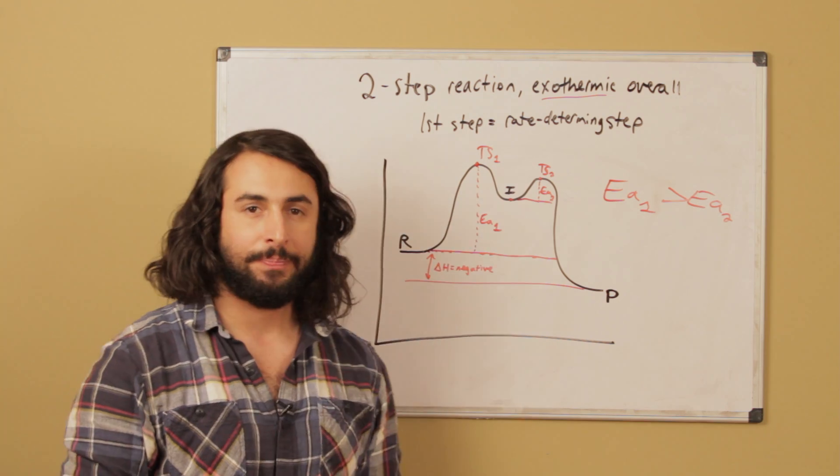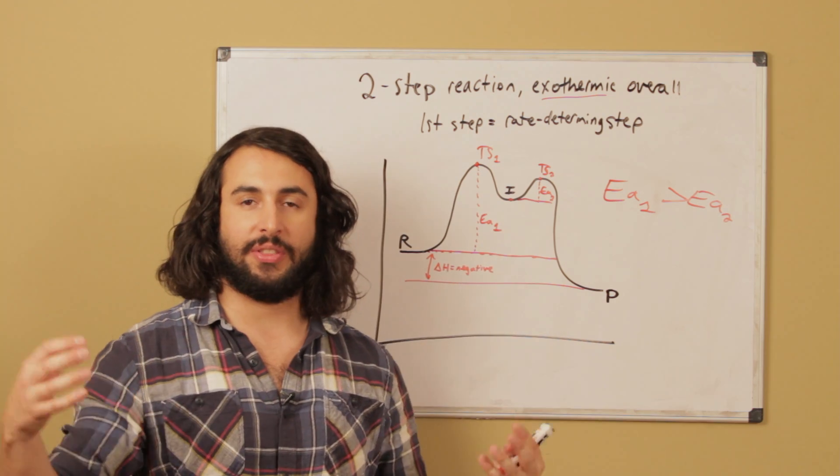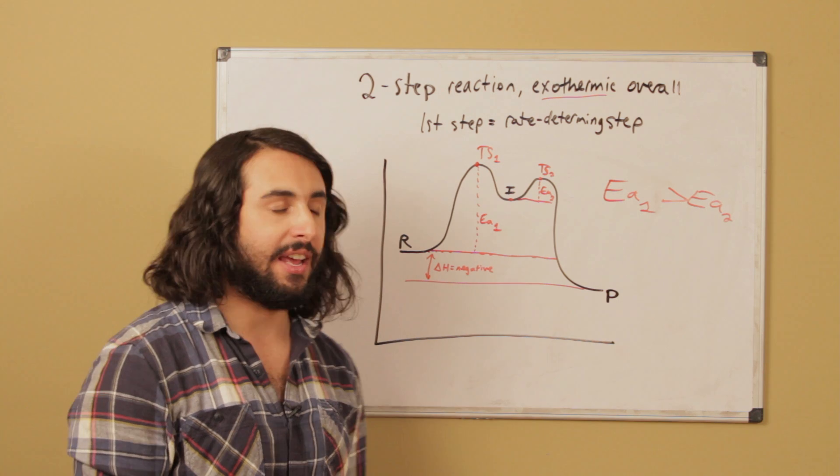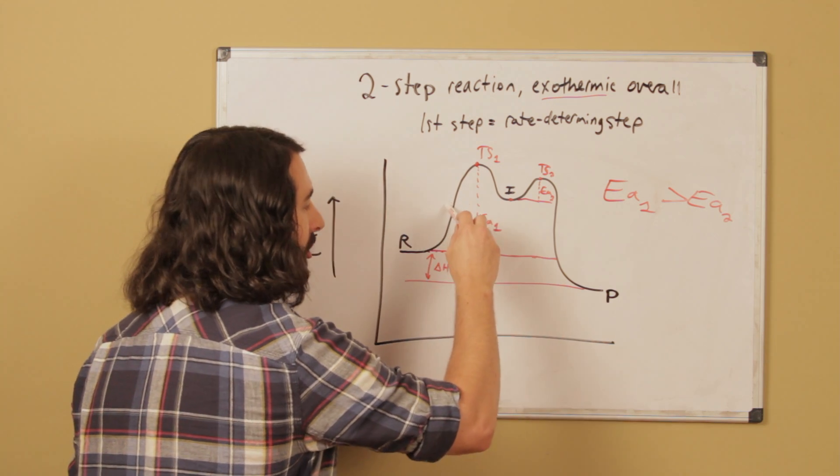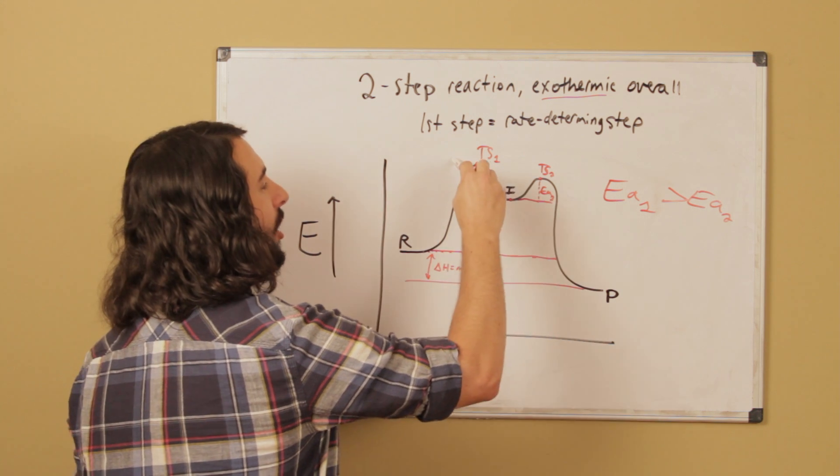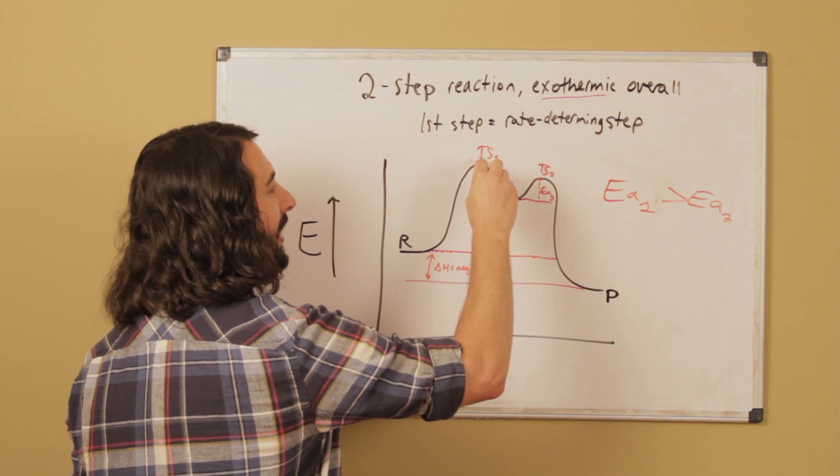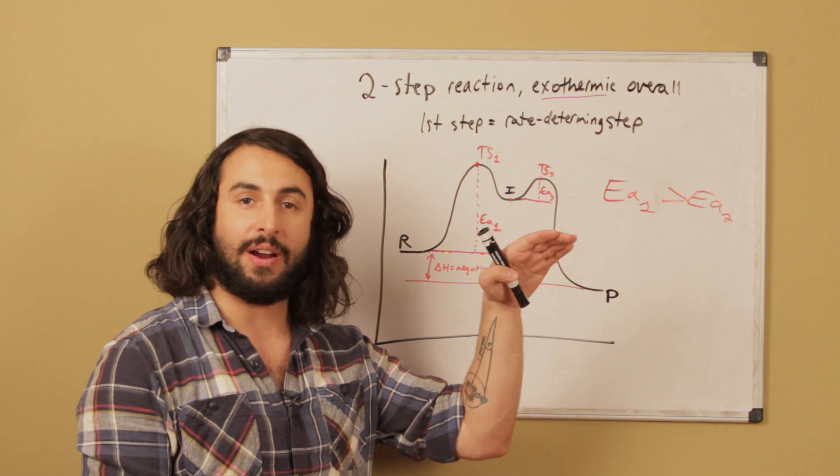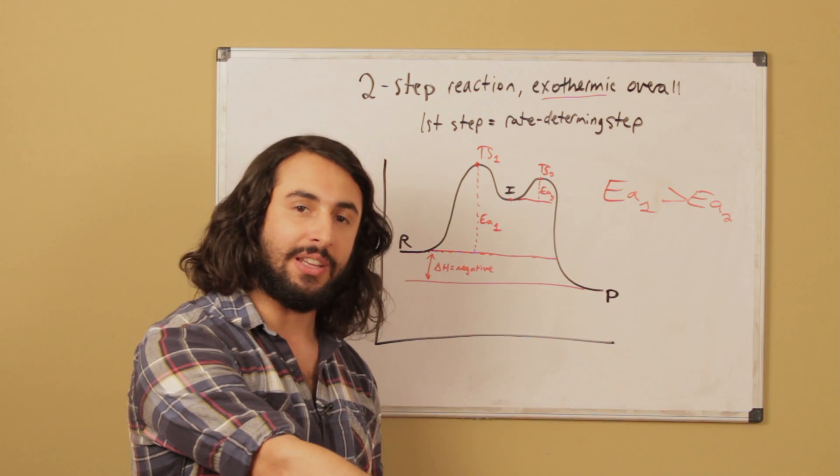The bigger the activation energy is, the more often collisions will not result in a reaction. They can collide with this much kinetic energy and they don't go, a little more and they don't go—only when they collide with enough kinetic energy to get over that very large barrier do they go ahead and generate the intermediate.